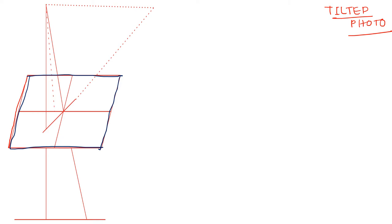My aircraft is at a location denoted as O, and I will make a line along which my aircraft is moving — this is called the flight line. The line along which the aircraft is moving is called the flight line. The position of the camera or the position of the lens is denoted as point O, which is called the point of projection.